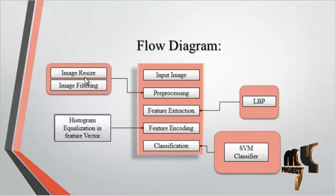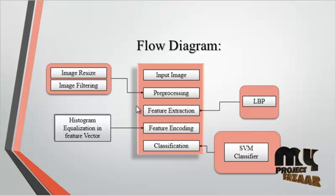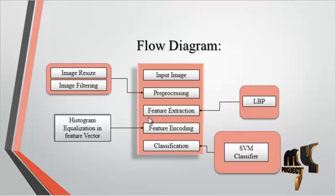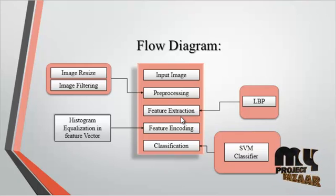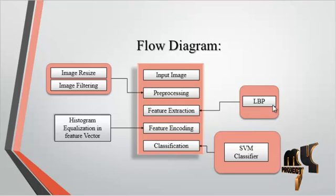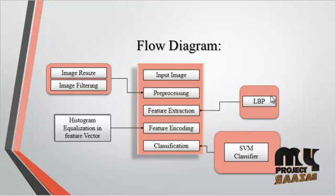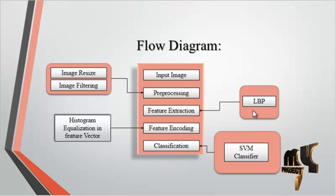During resizing, the image dimensions are converted into an aspect ratio. Filtering is then applied to remove noise present in the input image. After filtering, face detection is performed using the Viola-Jones method. After extracting the face regions, feature extraction is carried out using LBP — Local Binary Patterns — where pattern values are extracted from the face image.